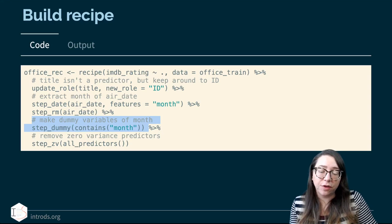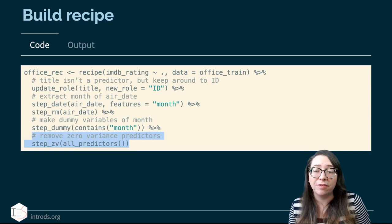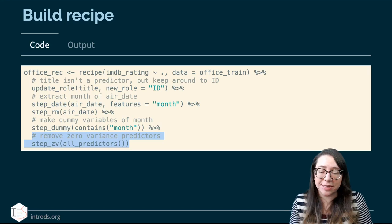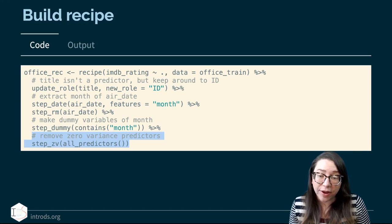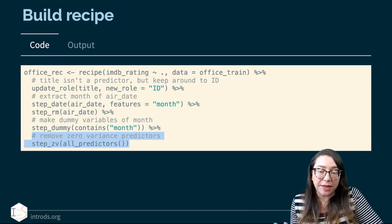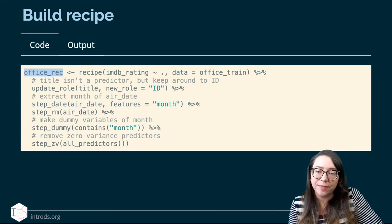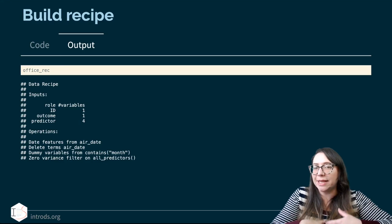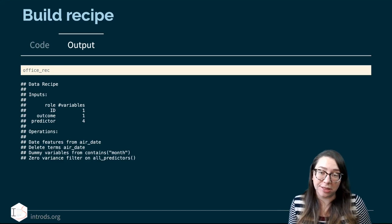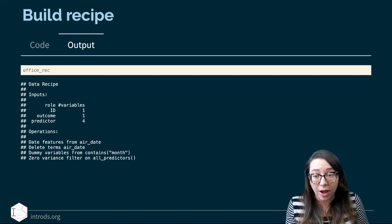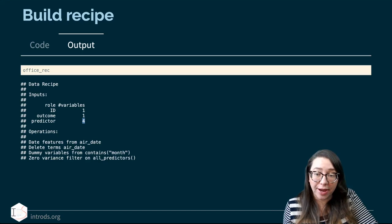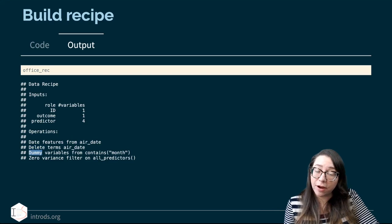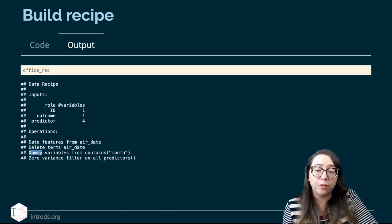Finally, we almost always do a step of removing zero variance predictors. I'm using step_zv for zero variance to remove all predictors that have zero variance. That's basically our recipe outline, and I'm saving it as office_rec for recipe. This is the output of that recipe — it's not yet been applied to the data set, it's just there to become part of our workflow so we can fit the model. It tells us that I have one outcome (the IMDB rating), several predictors, and one ID variable. We're extracting date features from the air_date variable, then deleting it, creating dummy variables for predictors containing 'month' in their title, and removing zero variance variables.